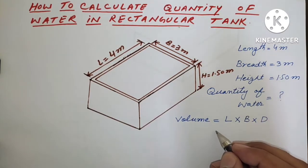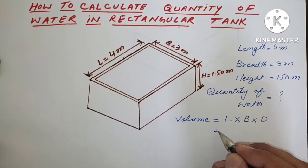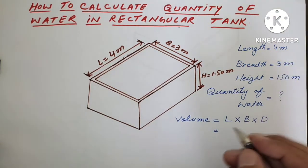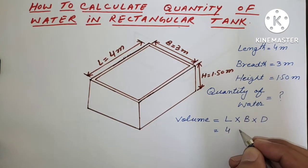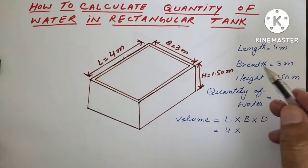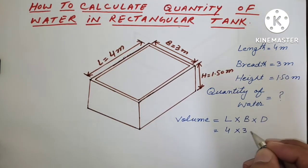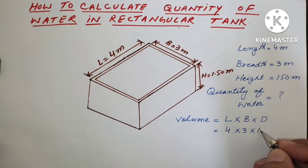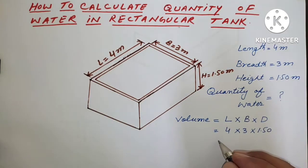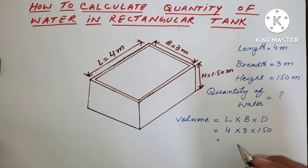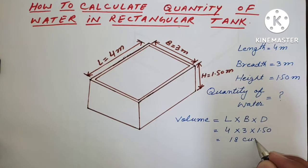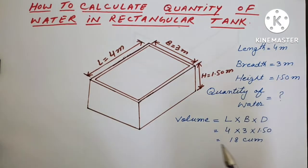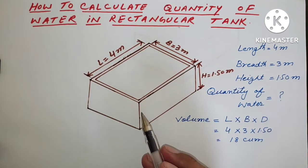For the calculation of volume, we have the formula: Volume = Length × Breadth × Height. We will put the values here — length is 4 meters, multiplied by breadth 3 meters, and height is 1.50 meters.